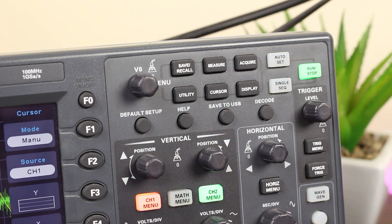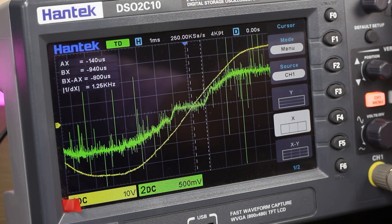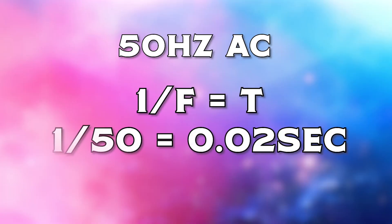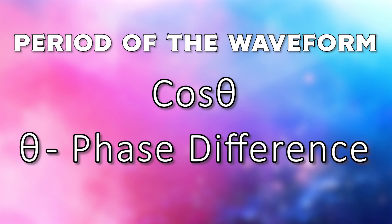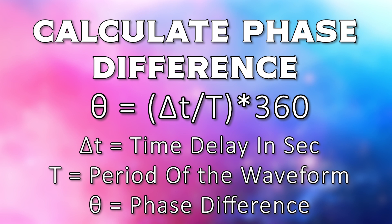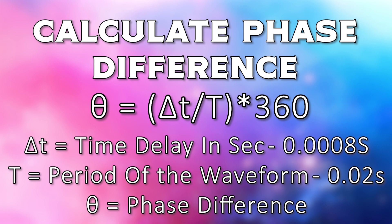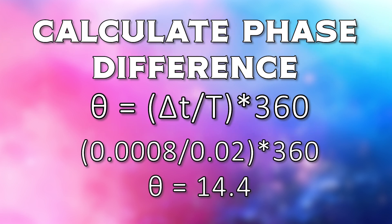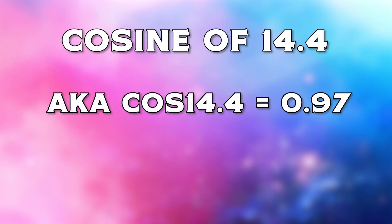Using the oscilloscope's cursor function, I measured the time difference, which is 800 microseconds. The measurement is done for one AC cycle, which for 50Hz completes in 0.02 seconds. We know the power factor is cos θ, where θ is the phase difference. To calculate the phase difference, we use the formula: (ΔT / T) × 360. ΔT is the time delay, which is 0.0008 seconds, and T is the time period, 0.02 seconds for 50Hz (or 0.0166 seconds for 60Hz). Calculating this gives θ = 14.4°, and cos(14.4°) = 0.97, so the power factor is 0.97.